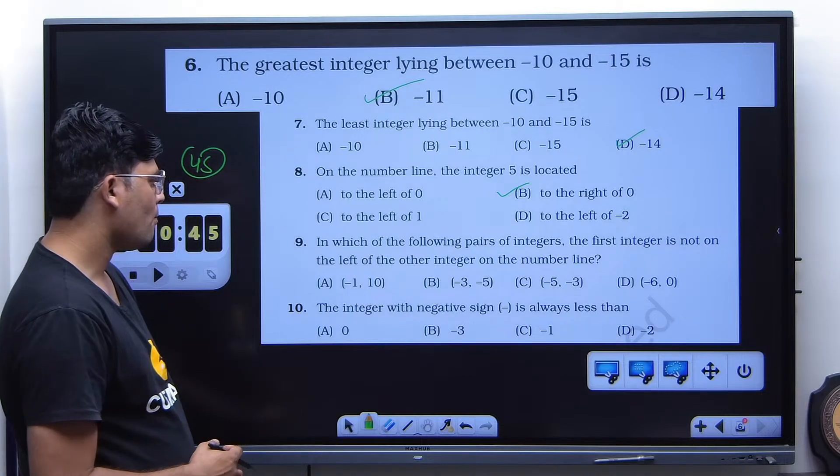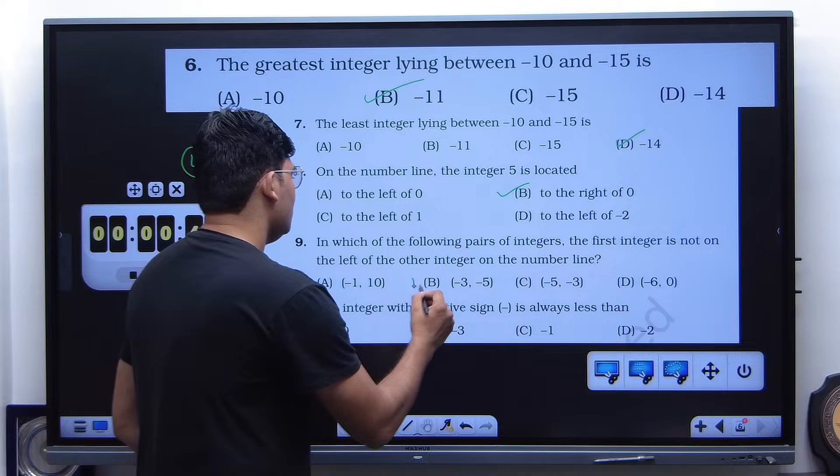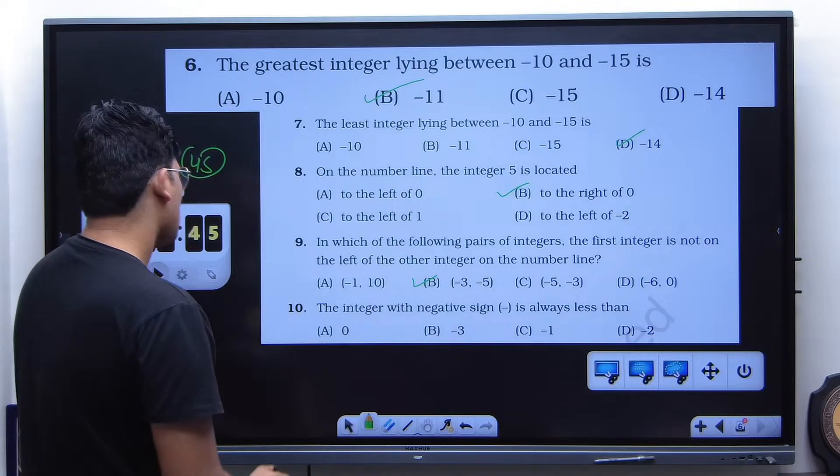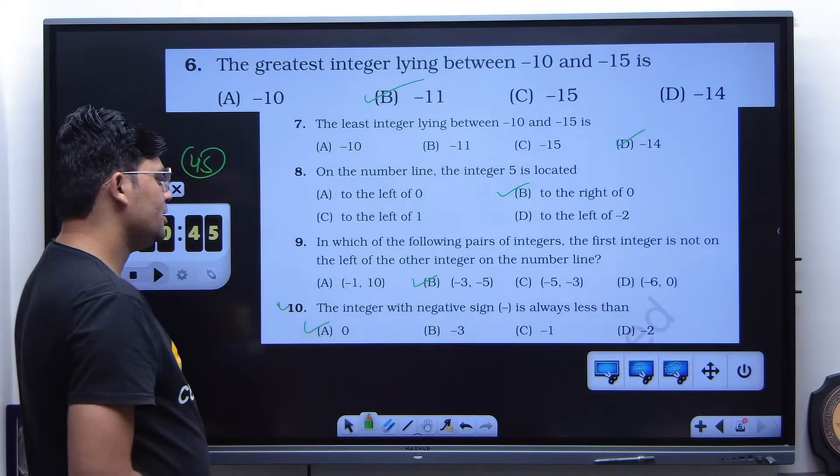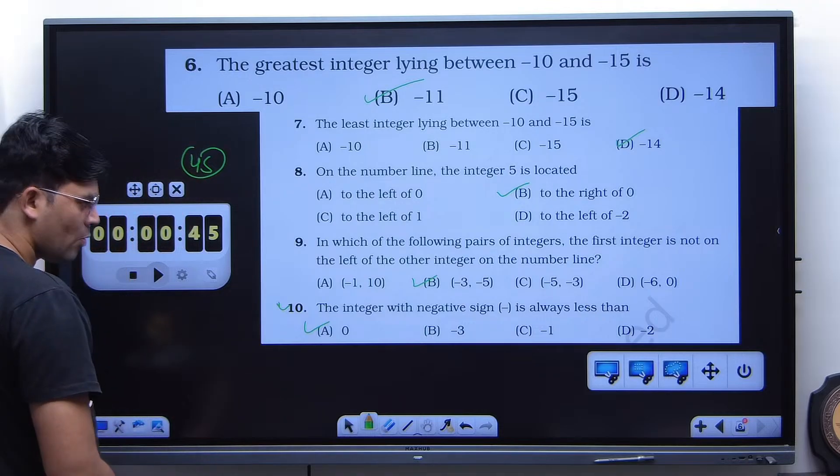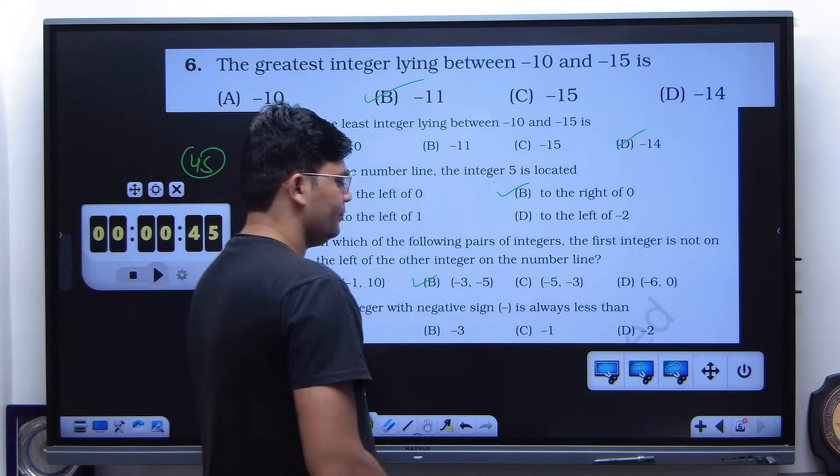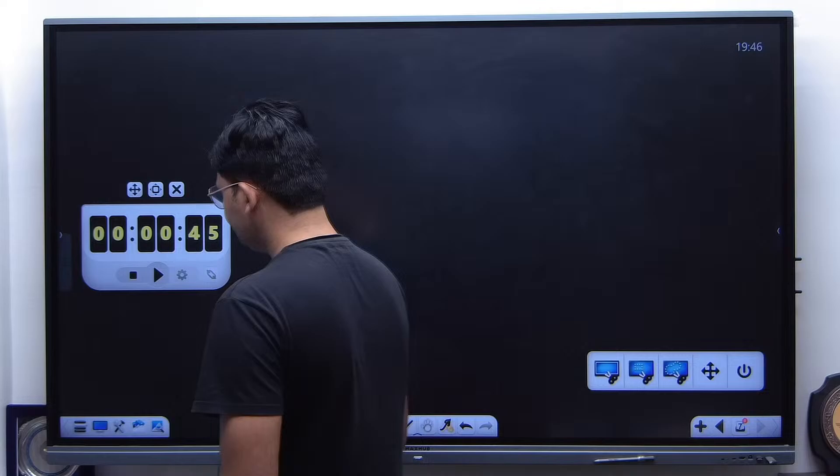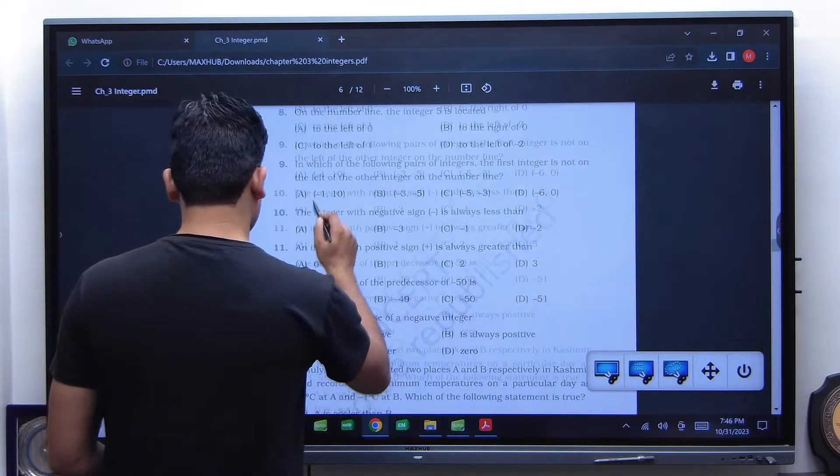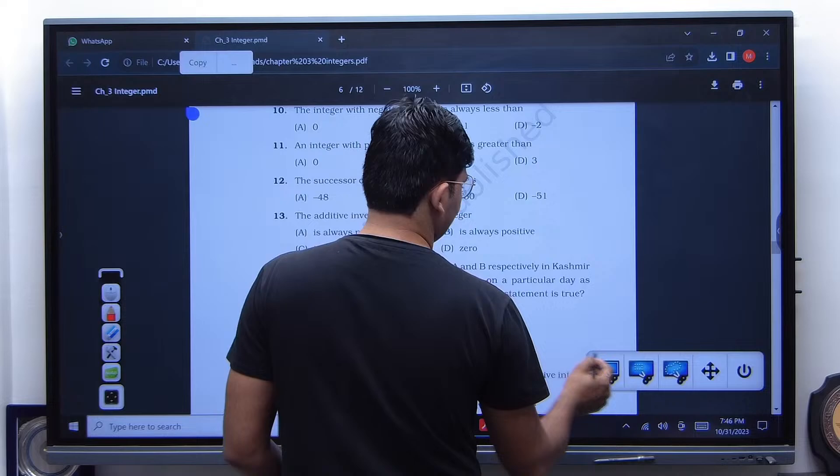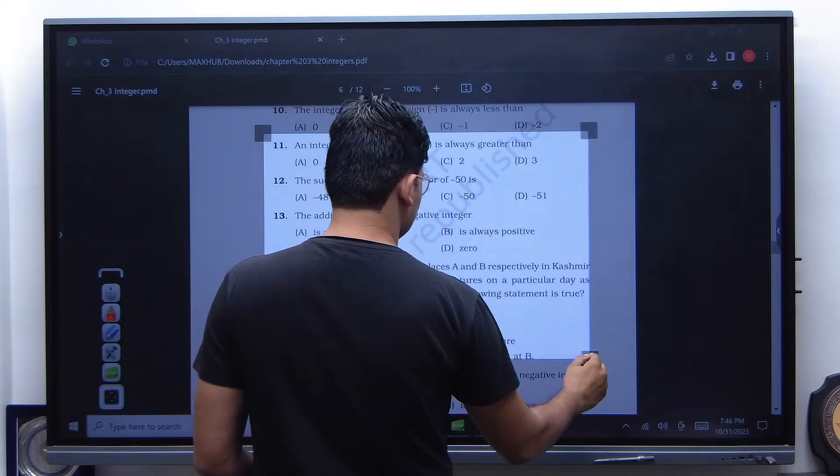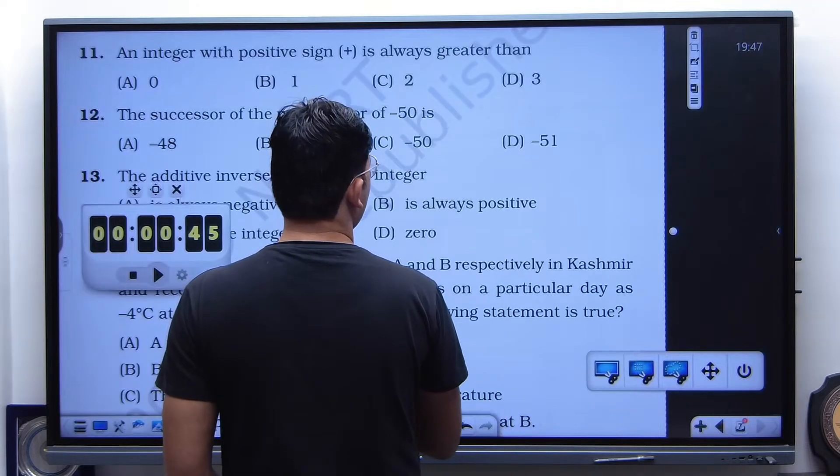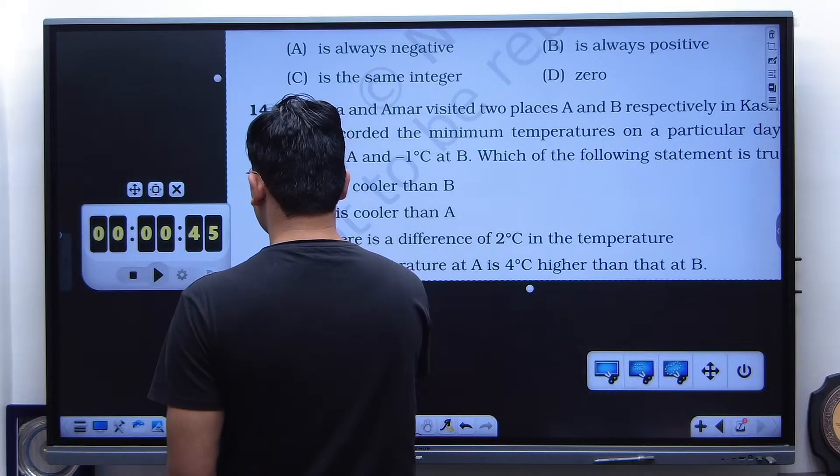Which of the following pair of integers the first integer is not to the left of the second integer. The integer with the negative sign is always less than. Great. Are you enjoying these questions? Yeah. The tone did not match your sentence. I think you are getting bored.